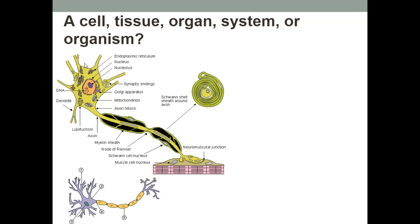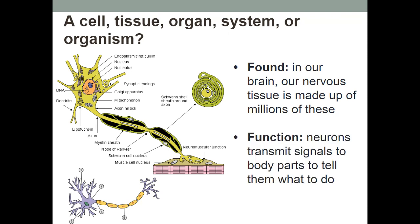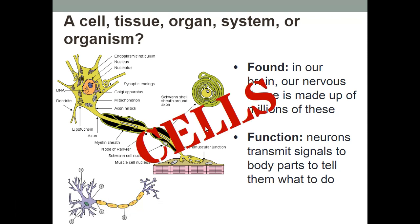Here we have a nerve cell found in our brain — our nervous tissue is made up of millions of these. The neurons transmit signals to body parts to tell them what to do. You can see one shown here attached to muscle tissue. It is a cell — those are neurons, they're nerve cells.